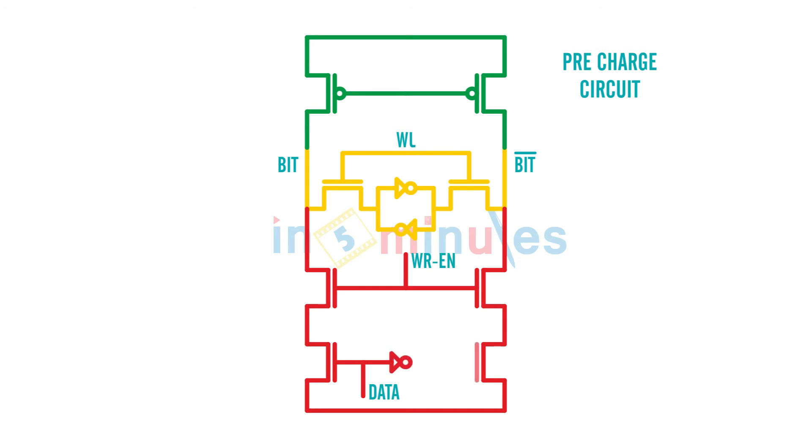Let's quickly understand for the read and write what's going to happen. For the read operation, if you remember, we wanted bit and bit bar both to be equal to VDD. So what we did was we made phi, which is this point - that's correct - this is P.